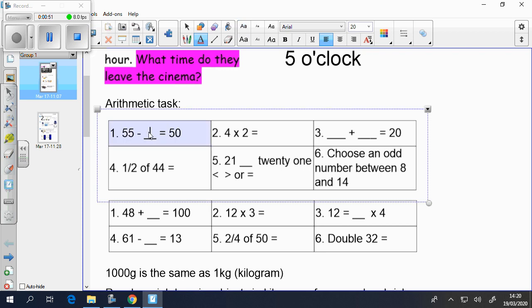55 take away 5. 4 times 2 is 8. You've got something plus something equals 20. So you can do your number bonds to 20. You could have 10 plus 10 equals 20. You could do 15 plus 5 equals 20. You could do 17 plus 3 equals 20. Lots of different ways to make 20.